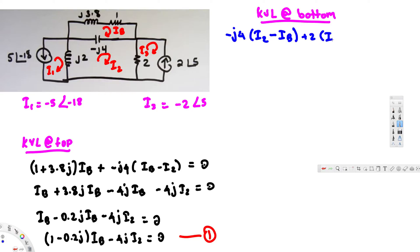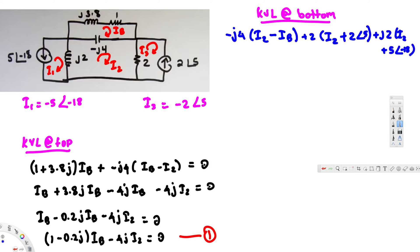We already know i3 = negative 2 angle 5°, so subtracting a negative makes it positive: plus 2 angle 5°. Continuing around the loop through the j2 impedance gives plus j2 times i2, and since i1 is in the opposite direction and i1 = negative 5 angle negative 18°, subtracting a negative gives plus 5 angle negative 18°. Setting the full expression equal to zero completes the KVL equation.